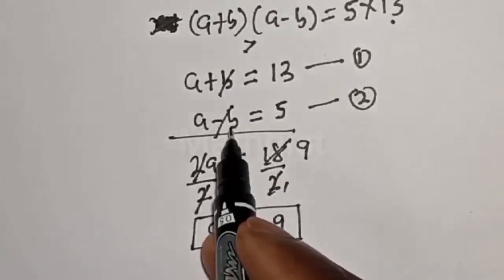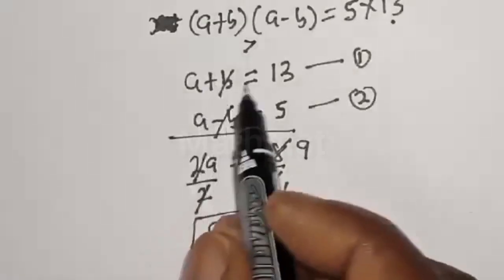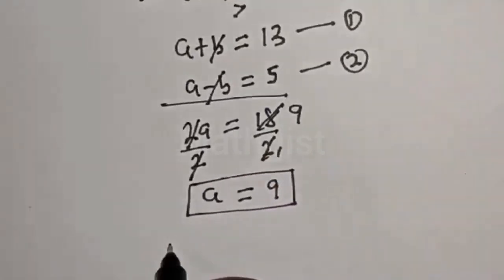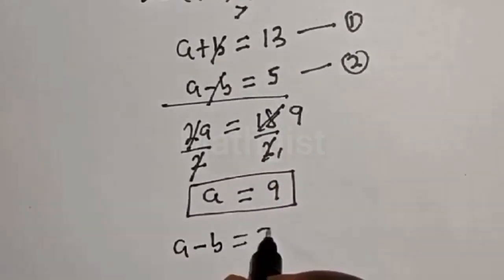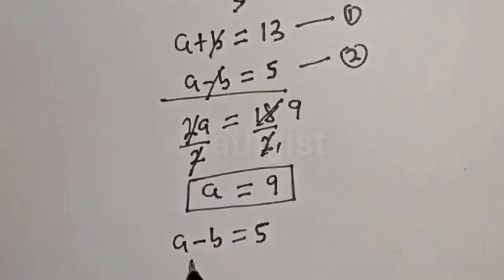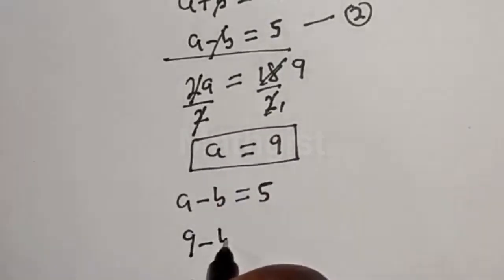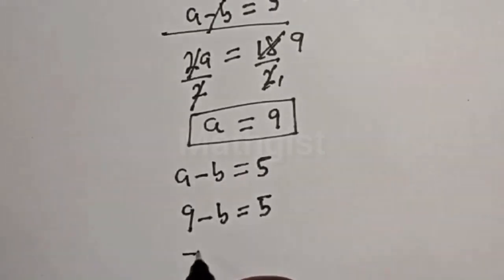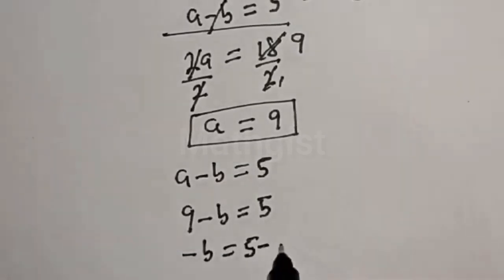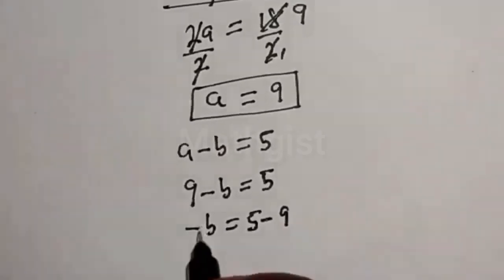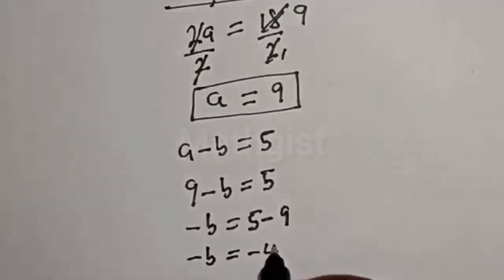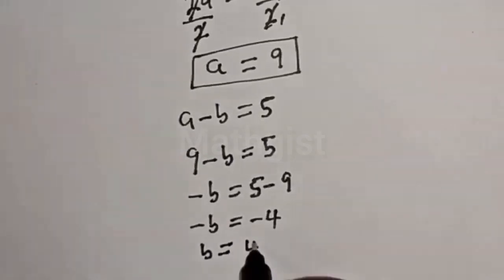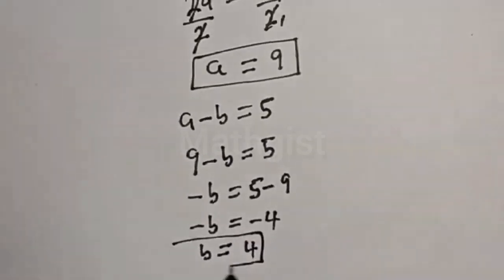Now we solve for b using equation 2: a - b = 5, where a = 9. So 9 - b = 5, which gives -b = 5 - 9 = -4, therefore b = 4.